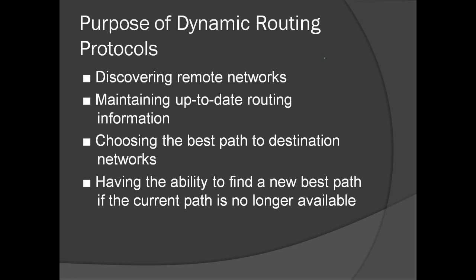What is the purpose of dynamic routing protocols? The first is discovering remote networks — if there are changes on a particular router or segment, it will automatically discover a possible path. The second is maintaining up-to-date routing information, meaning it holds a database of the possible paths on the network, depending on how you configure the routers.